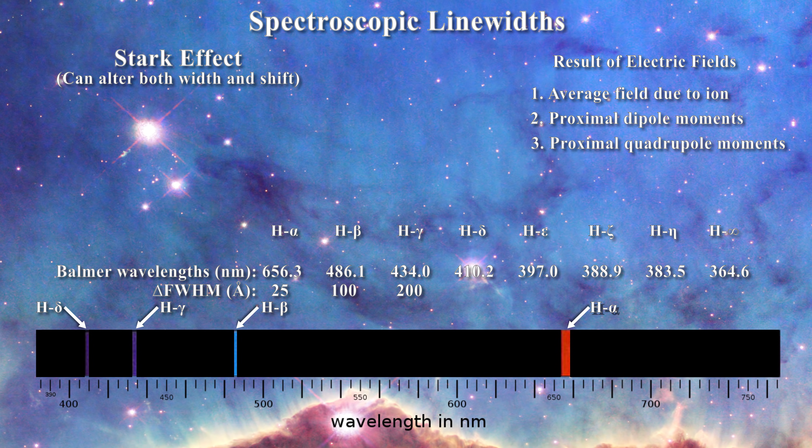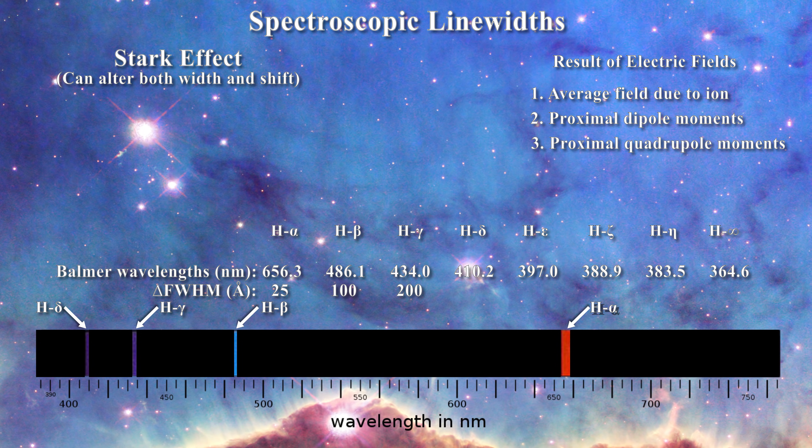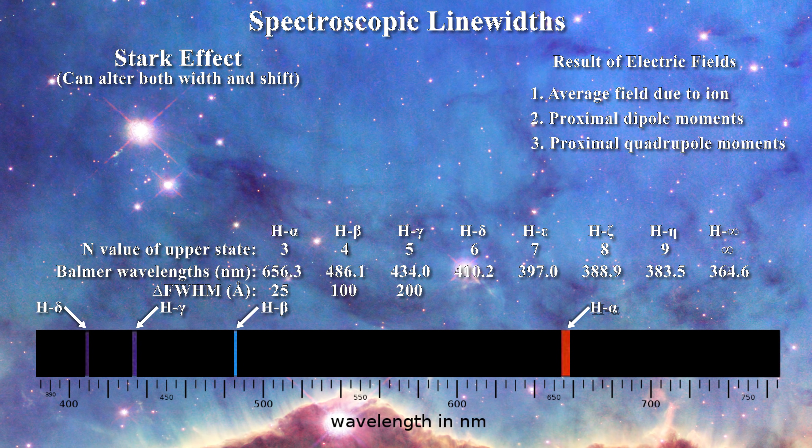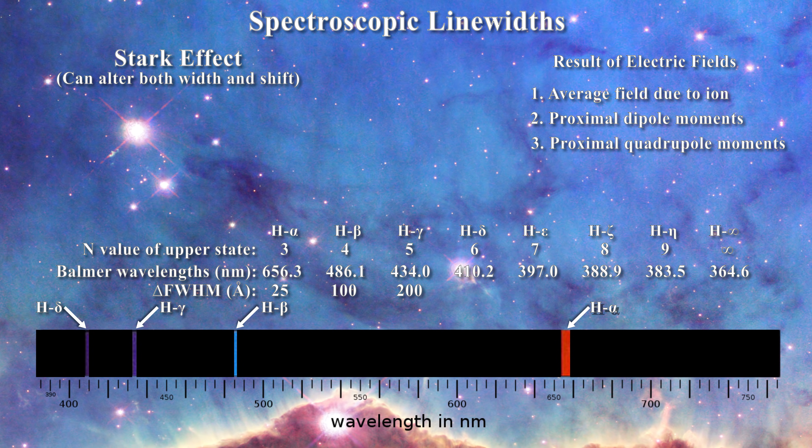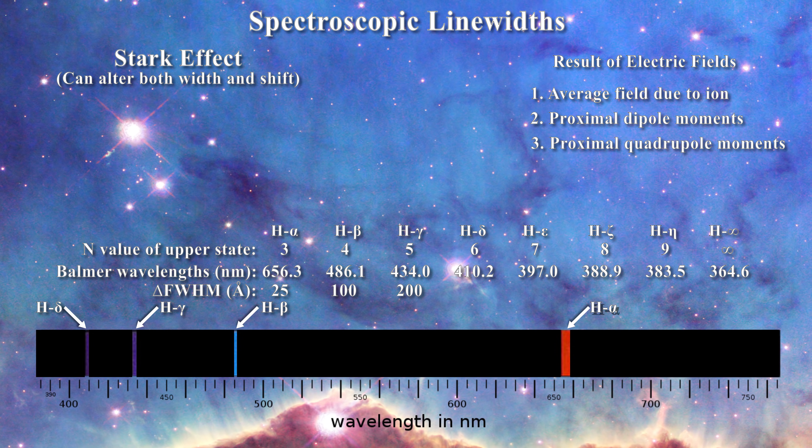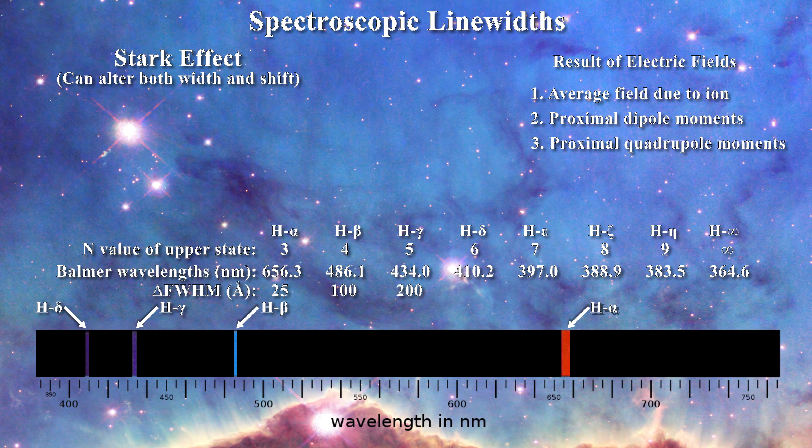The same is true for hydrogen-like ions. This broadening scales with the square of the principal quantum number n, so the lines get broader and broader as n increases. The increased broadening with increased principal quantum number results in the merging of the Balmer lines at high n values. This has been used by the astronomers to measure the electron density of flares, for instance,